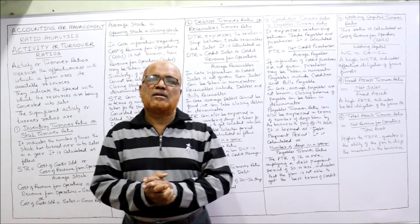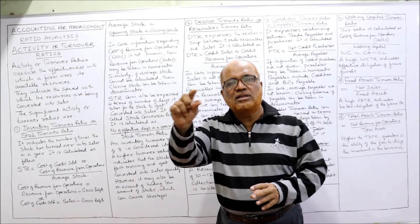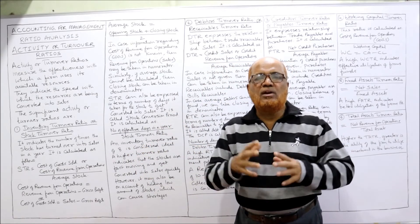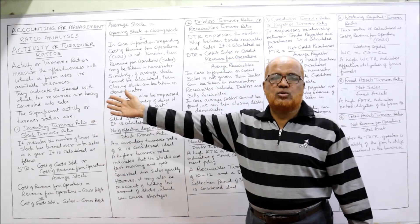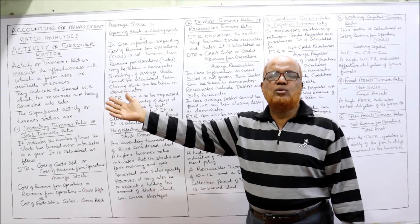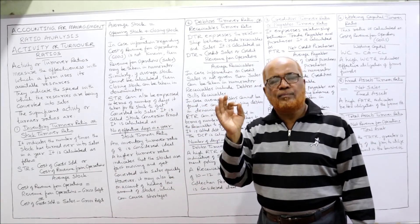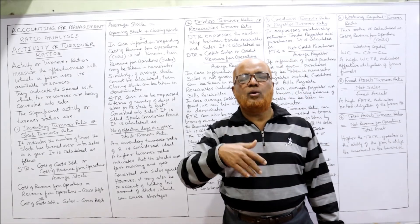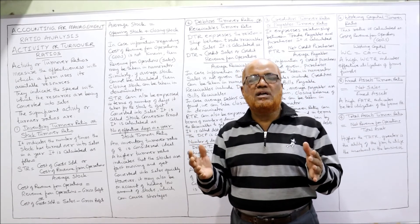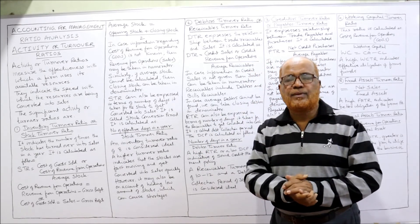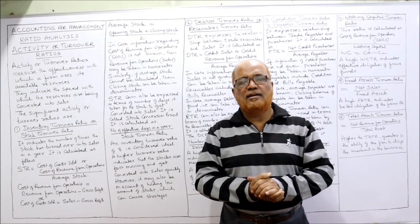These are the six commonly used activity or turnover ratios. In examinations, theory questions may also ask you to explain activity ratios with examples. You need to explain what activity ratios mean and list the six significant ones. If you watch these videos with full concentration, you will find no difficulty with problems since you already know each formula and its interpretation. The last category — profitability ratio — will be covered in the next video.